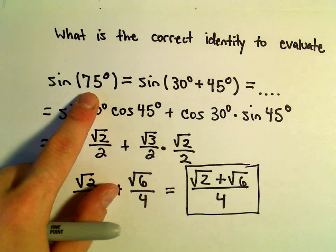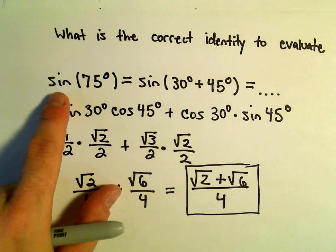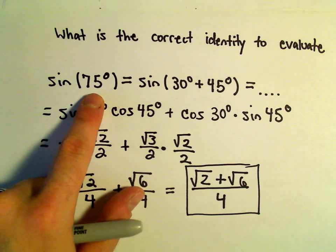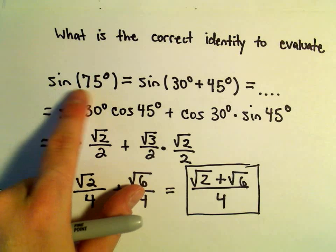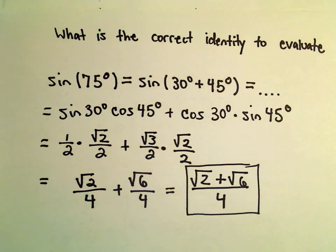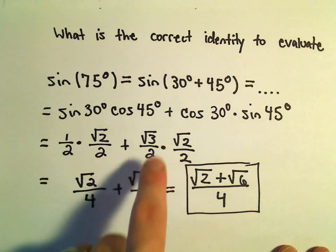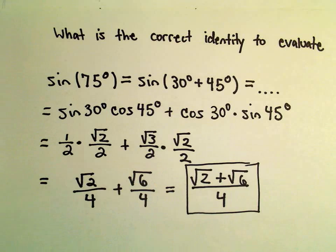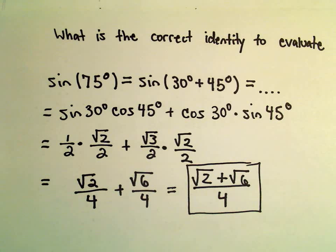Also, certainly these identities are more useful and come in handy in more places than just to evaluate trig functions at different angles. So don't think this is just an exercise and never use this identity again. It's kind of pointless. We've got a calculator. Certainly these identities do come into play in other places.